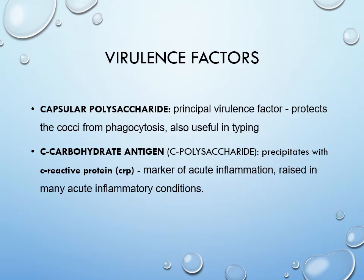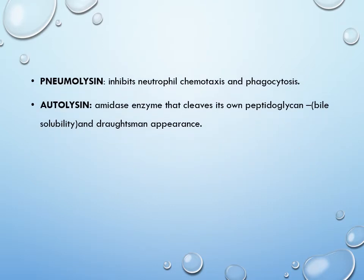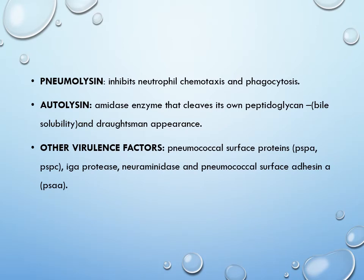The second virulence factor is the C-carbohydrate antigen — not C-reactive protein, but it precipitates with it; hence it is called C-carbohydrate antigen and is a marker of acute inflammation. Then there is pneumolysin, which inhibits neutrophil chemotaxis and phagocytosis. Another enzyme is autolysin — it will autolyse the bacteria itself; colonies visible on a plate may disappear after a few days. The amidase enzyme cleaves its own peptidoglycan, giving the draughtsman appearance. Other virulence factors include pneumococcal surface protein, IgA protease, neuraminidase, and pneumococcal surface adenosine.